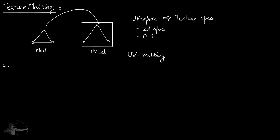There should not be any coordinate assigned outside that range. For example, if this is the UV space and I assign a vertex coordinate outside this space for one particular vertex and inside the space for the remaining two, this will be an invalid mapping and we will not be able to map the texture onto the complete mesh.